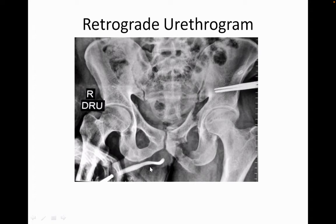What is the difference in doing an RGU in a patient who has a cut-off like this compared to another patient where the contrast is entering the bladder? It can be a gravity or incremental urethrogram if you are suspecting urethral injury — there's a chance of extravasation and further introduction of infection can be prevented.